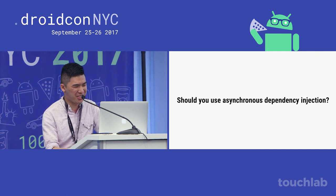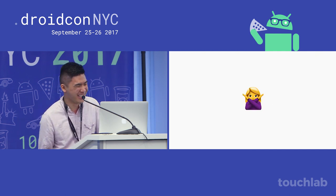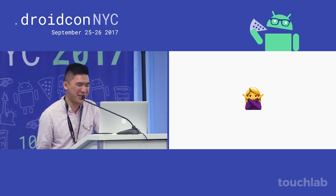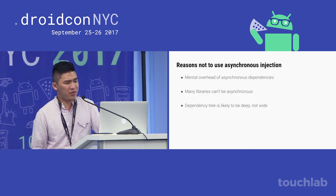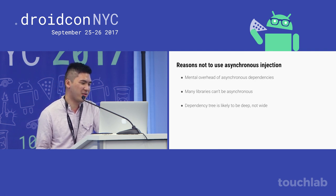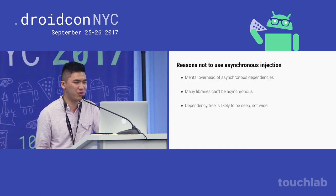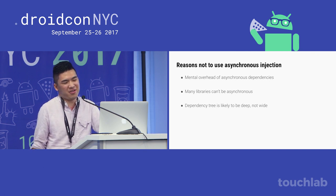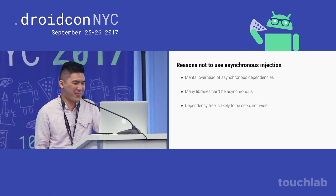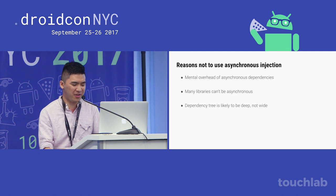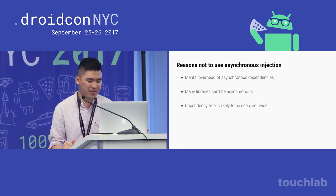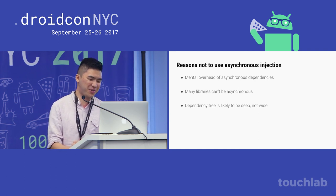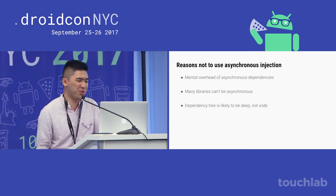So the big question is: should you use asynchronous dependency injection? And the answer is probably not. We went through a lot of work — I wouldn't say it took me two or three months, but we didn't get a lot of gains from it. Here are three reasons: there's a lot of mental overhead and extra code needed to implement async DI; a lot of libraries may just init on the main thread; and your dependency tree is likely to be deep, meaning if dependencies depend on each other serially, creating them asynchronously doesn't help much.